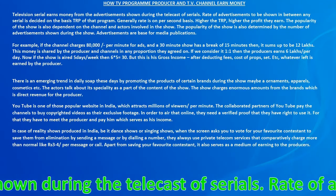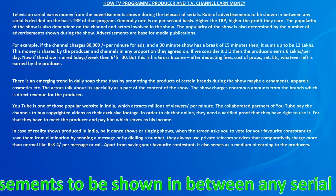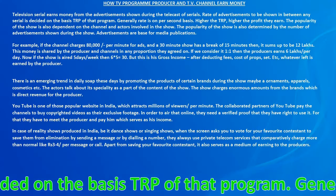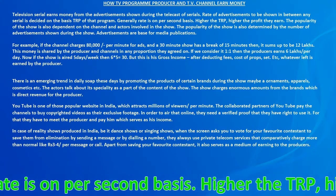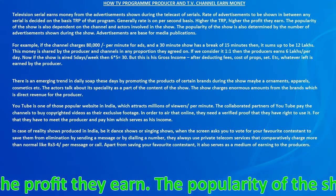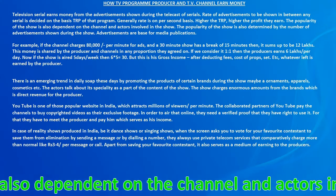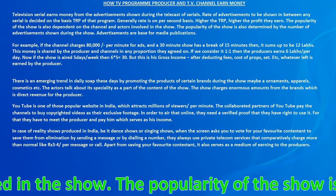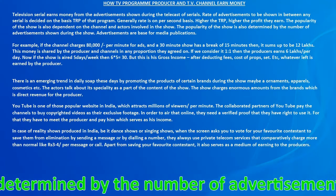The rate of advertisements to be shown in between any serial is decided on the basis of the TRP of that program. Generally the rate is on a per second basis. Higher the TRP, higher the profit they earn. The popularity of the show is also dependent on the channel and actors involved in the show, and is also determined by the number of advertisements shown during the show.